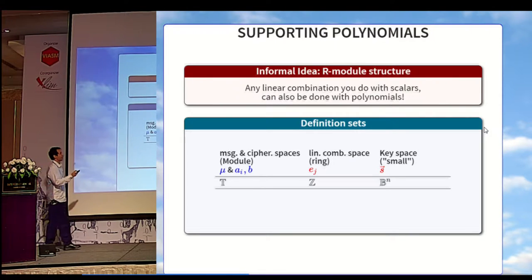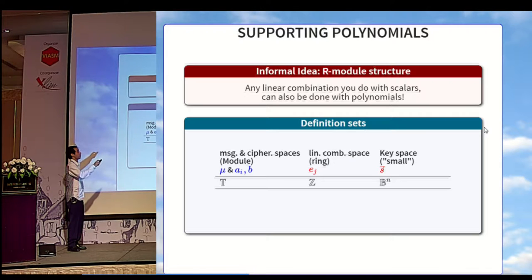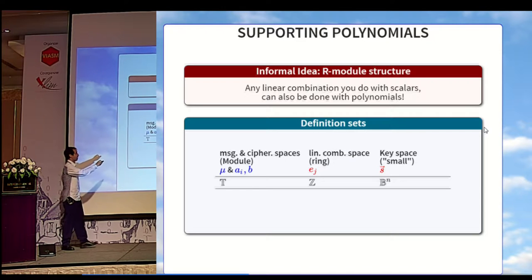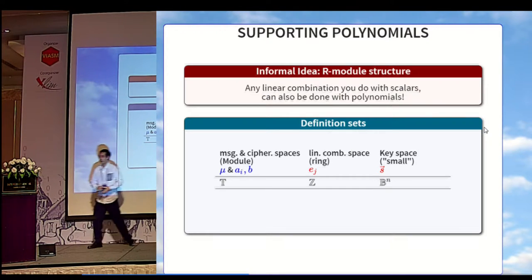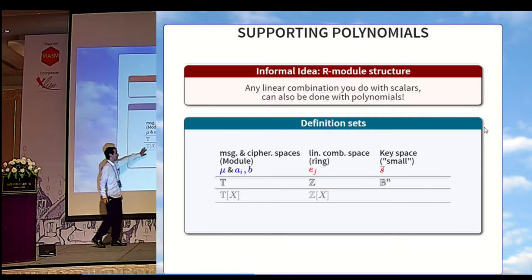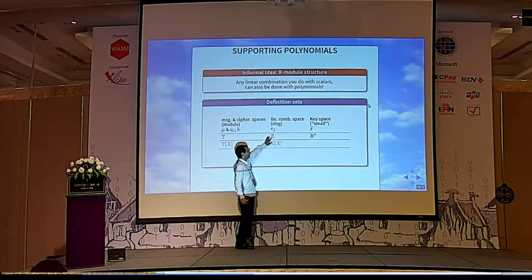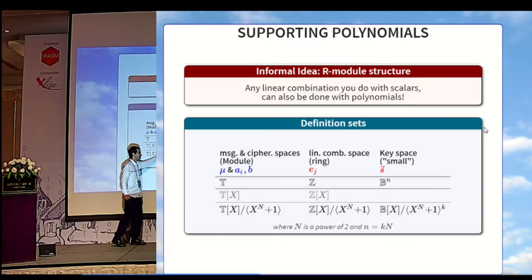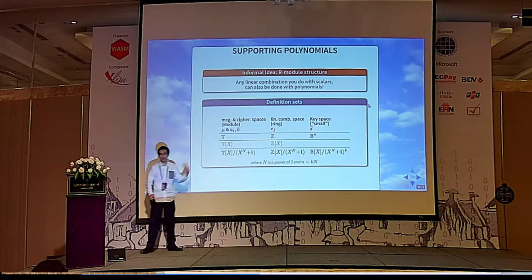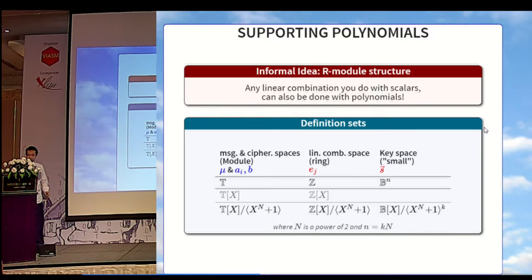In the presentation I used scalars, but we are going to support polynomials. In fact, it is only a matter of syntax. As long as we are in our module, everything defined over the torus — like messages or ciphertext coefficients — can be written equivalently as torus polynomials. For the coefficients of linear combinations, anything I took as integer, I can write as integer polynomials instead. It is still a module. If we are worried about preserving the degree, we can take everything modulo x^n + 1, where n is a power of 2, or quotient it with any other ideal. From now on, I will assume that everything is properly defined over polynomials.